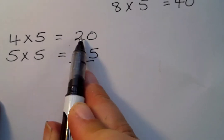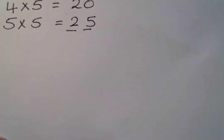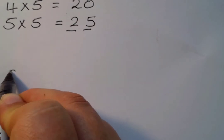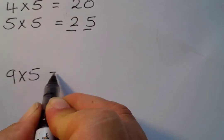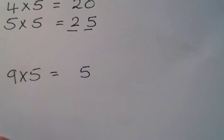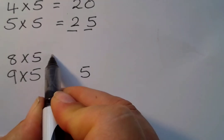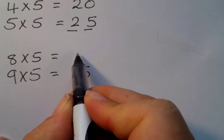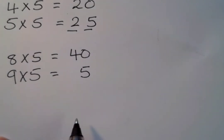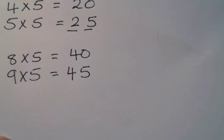Let's do that again with nine times five. We know it's going to end in a five, so let's think: what's eight times five? That's forty. So what's the answer going to be? Nine times five is forty-five.